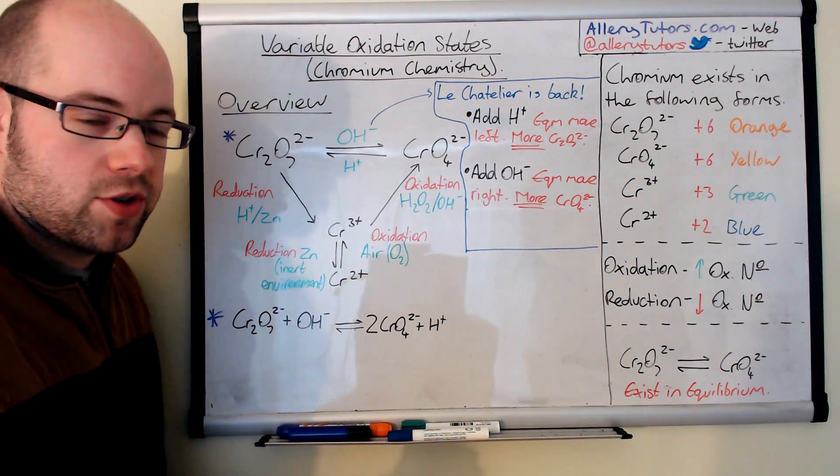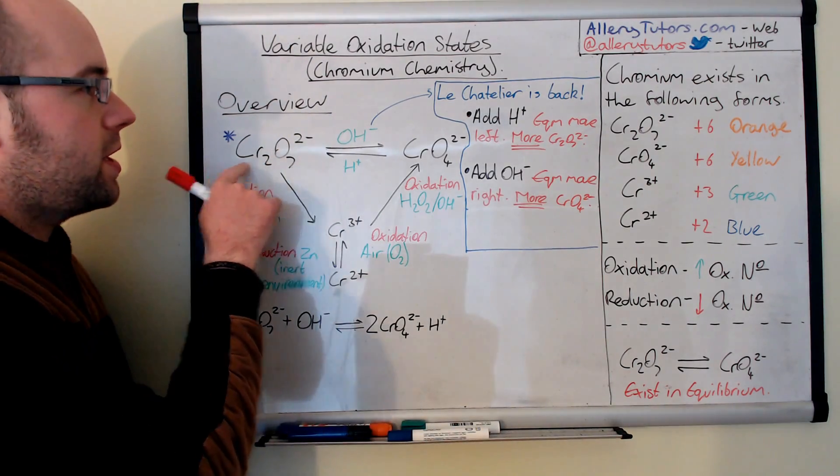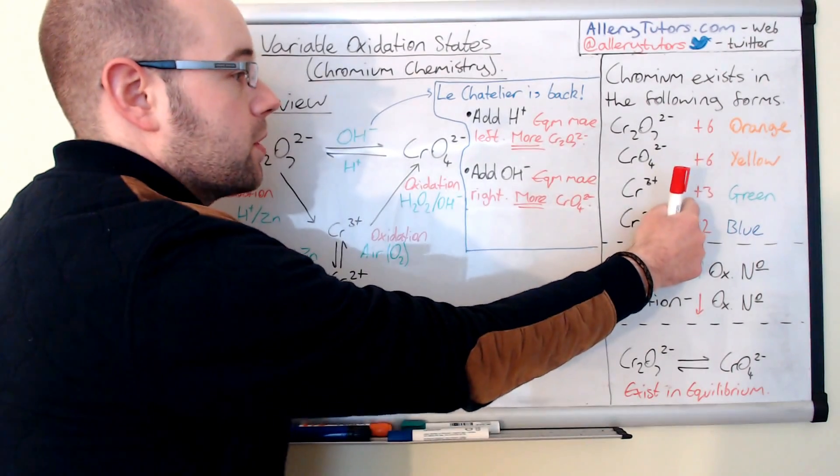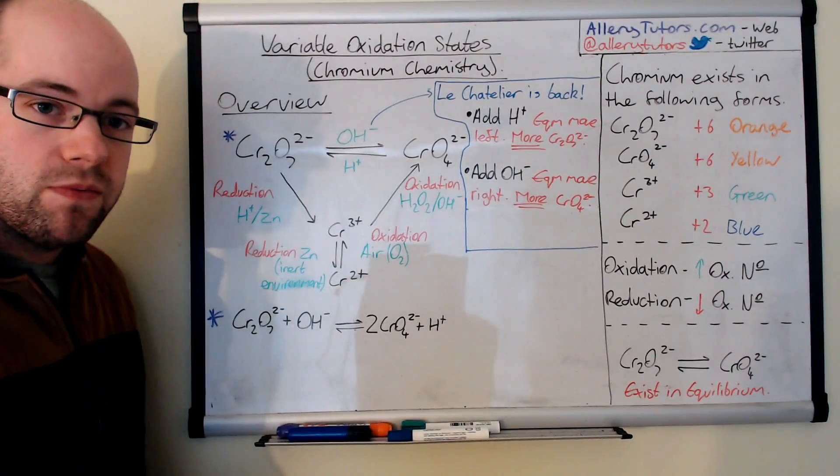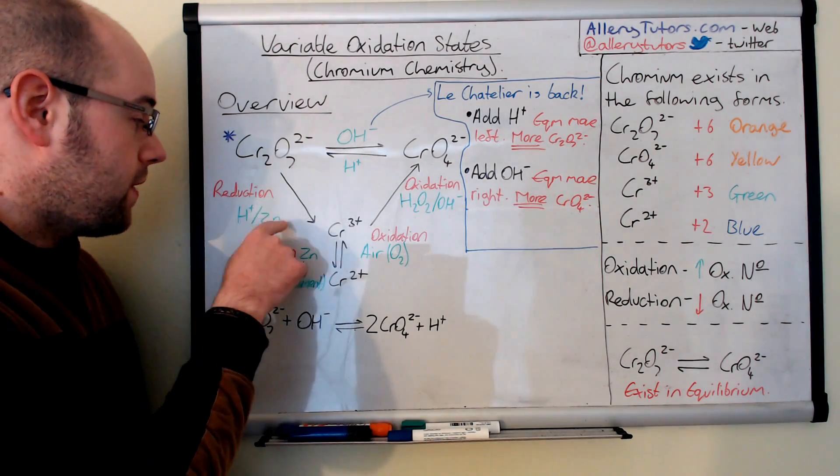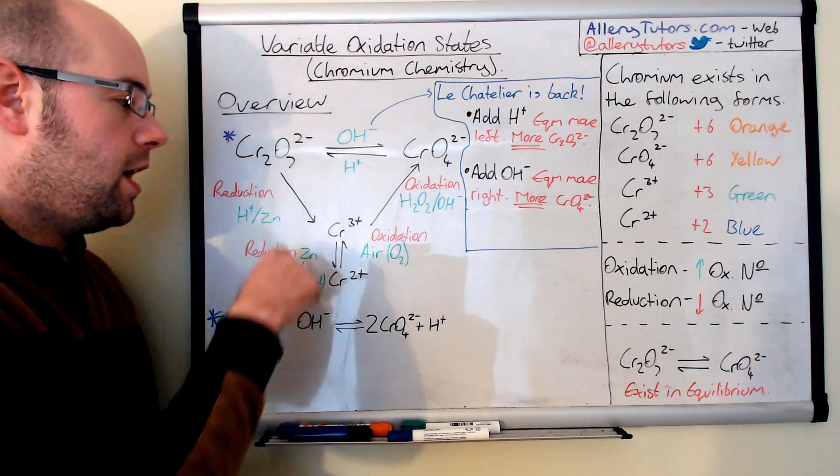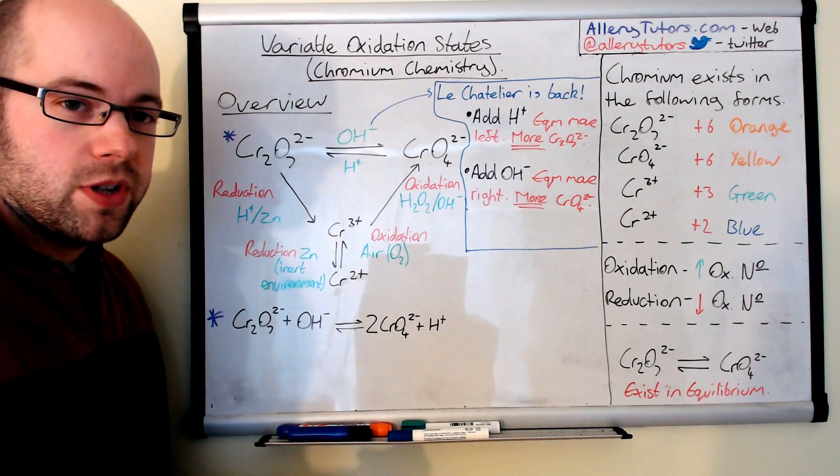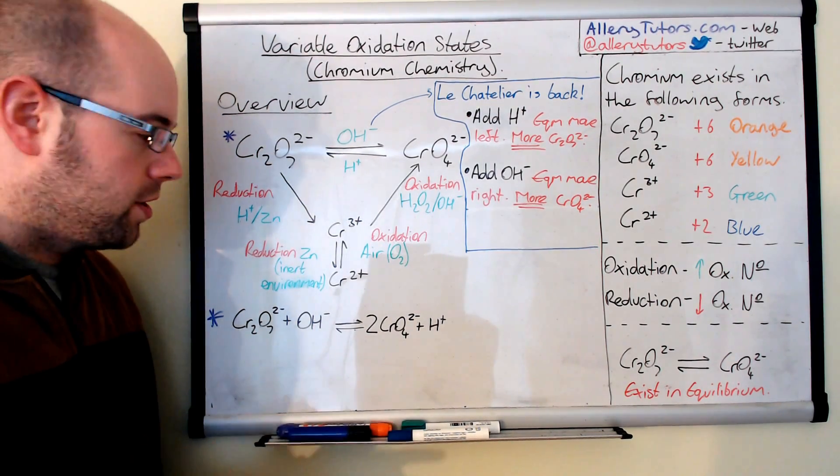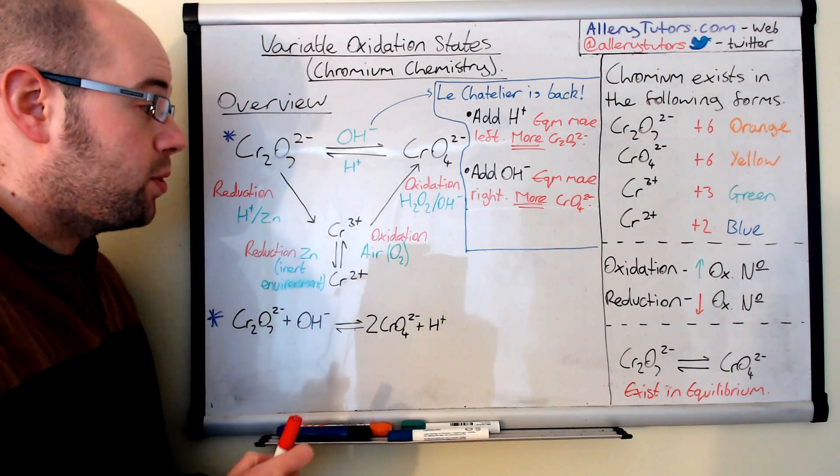This is reduction, because we've gone from plus 6 at the start here, and we've gone down to plus 3. So this is a reduction reaction, and effectively, we just add the acid and the zinc, chunks of zinc, swirl it round, and our colour, we should get a green colour, which shows that reduction process has occurred.